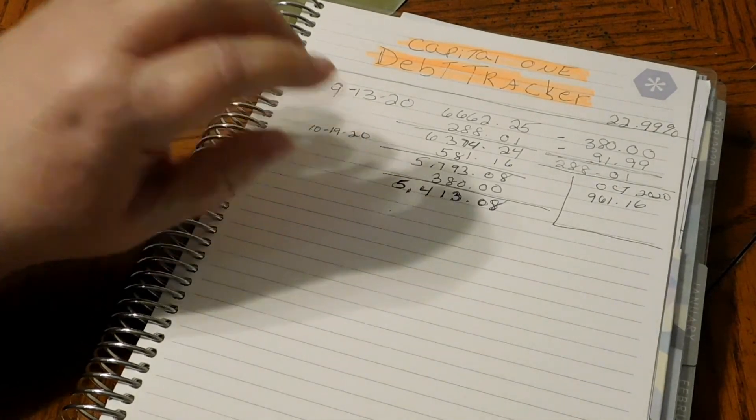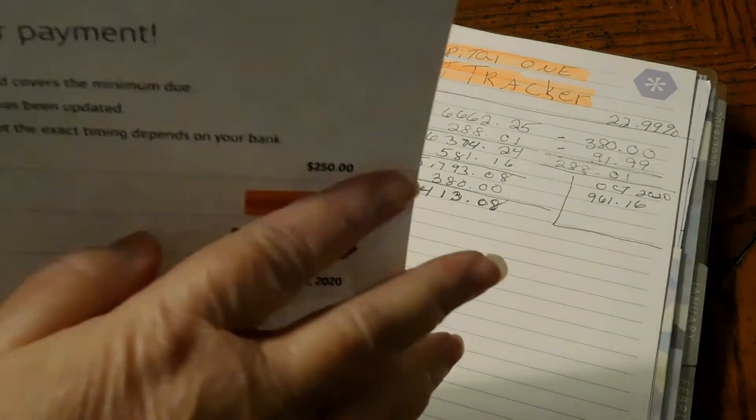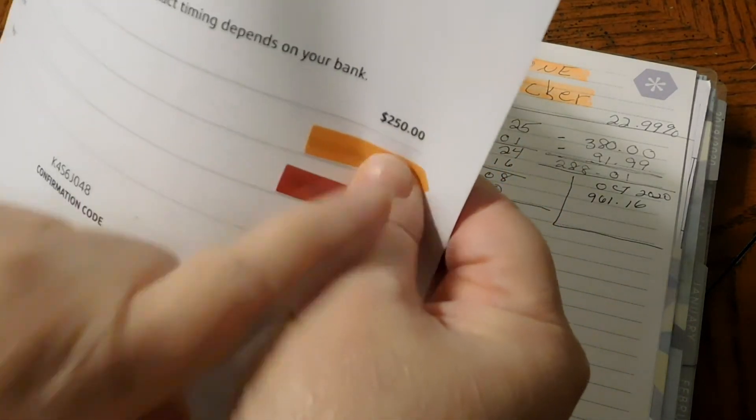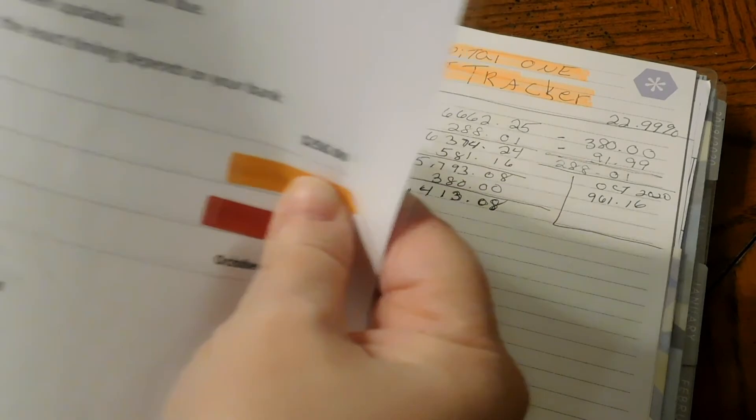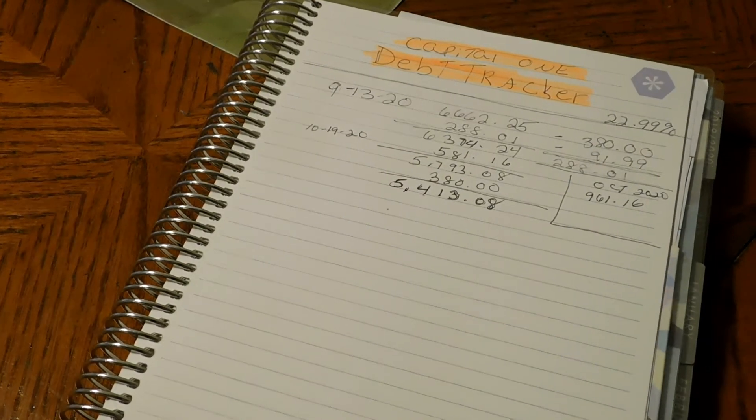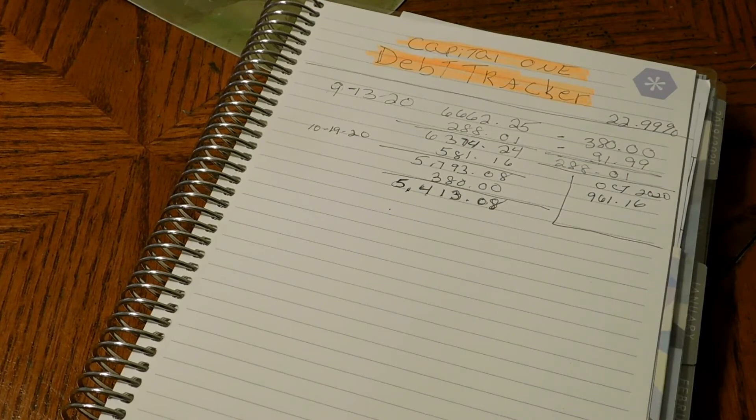But here is the paper I want to show you. I paid $250 to Capital One. I want to show you this paper to let you know that that payment was made.